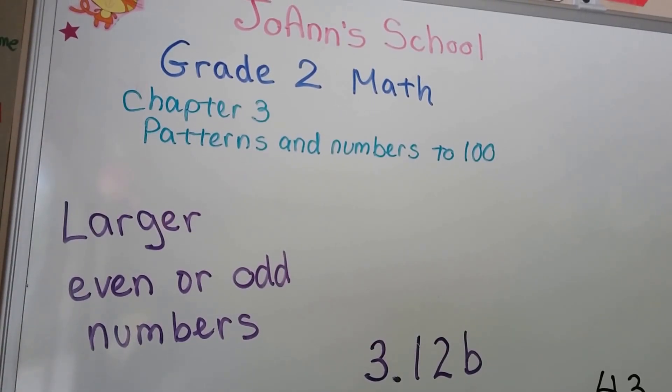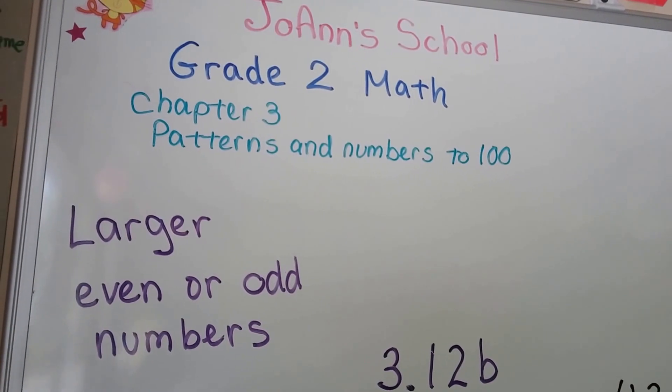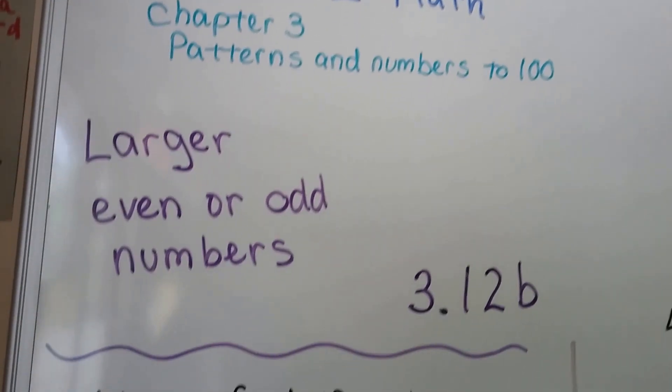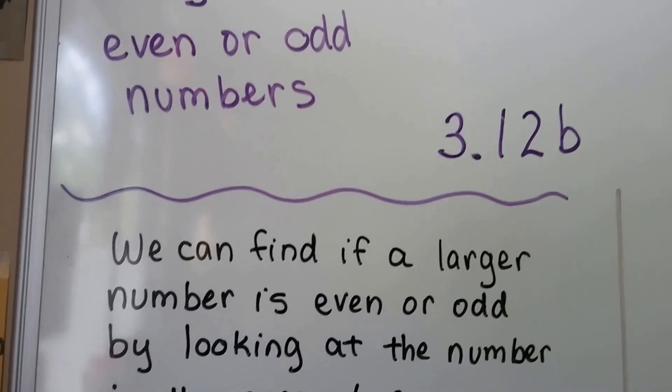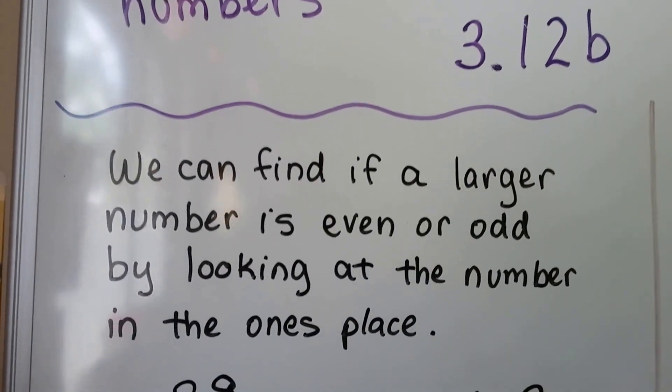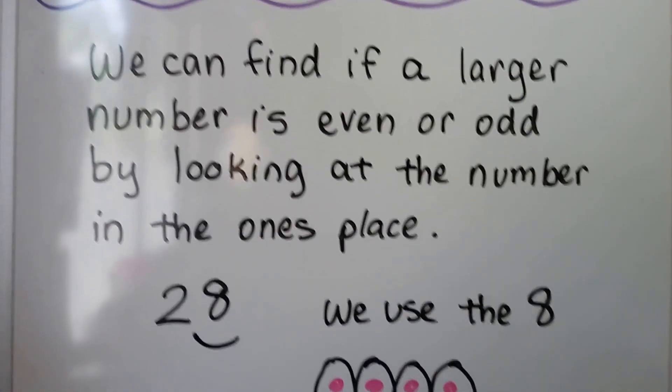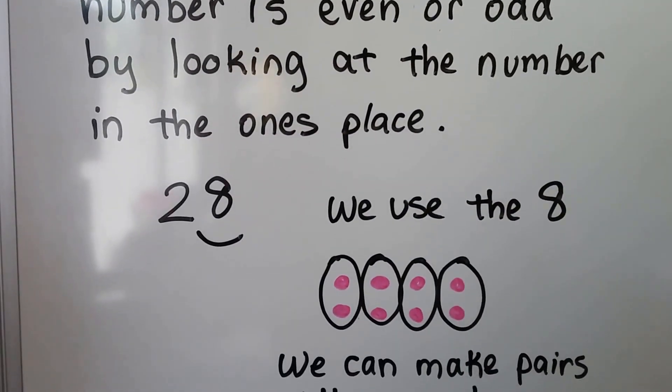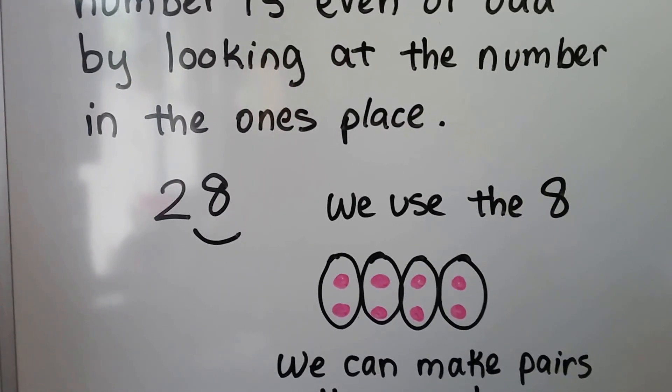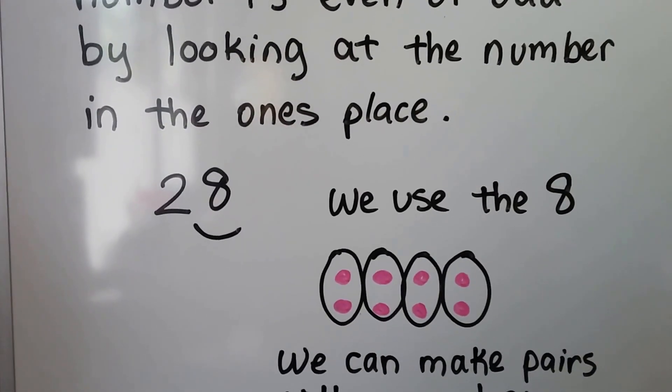Larger even or odd numbers, lesson 3.12b. We can find if a larger number is even or odd by looking at the number in the ones place. We look at the number 28, we use the 8 in the ones place.